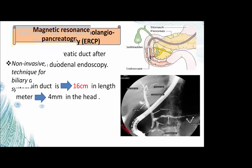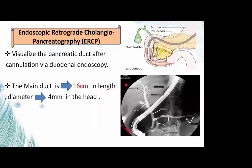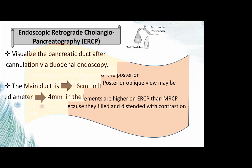Endoscopic retrograde cholangiopancreatography (ERCP) allows visualization of the pancreatic ducts via endoscopy. The main pancreatic duct should be less than 6 mm in diameter, tapering toward the head. The ventral duct appears foreshortened on ERCP because of the posterior course of the gland. Right posterior oblique view is done on ERCP; MRCP and ultrasound are preferred because they are non-invasive and do not require contrast on ERCP.